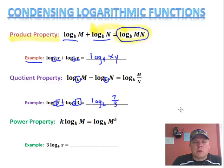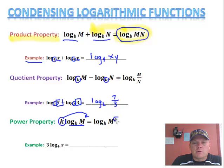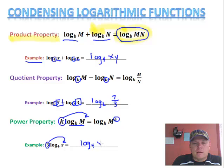The last one is the power property. When it says if I have something multiplied by a log, I take that something and I can move it — it actually becomes the exponent to that m. So we move it up there as the exponent. Our example: 3 is our multiple, so that's going to become our exponent of x. So I rewrite this as log base 4 of x to the third power.